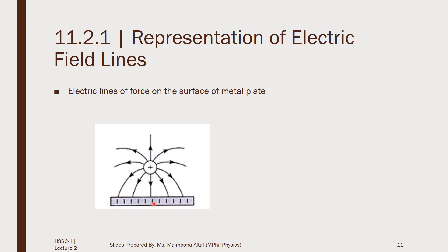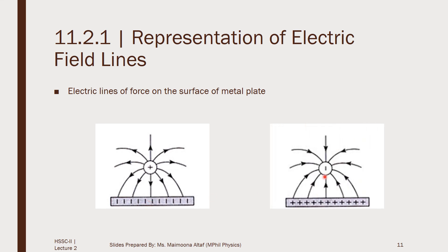Similarly, if we bring a negative charge near to the metal surface, the positive charges will be attracted by this negative charge and will come to the surface of the metal plate. Again, the field lines will originate from the positive charges and end on the negative charges. These field lines will always be perpendicular to the metal surface. The electric lines of force have the tendency to contract in length, which explains the attraction between oppositely charged bodies.